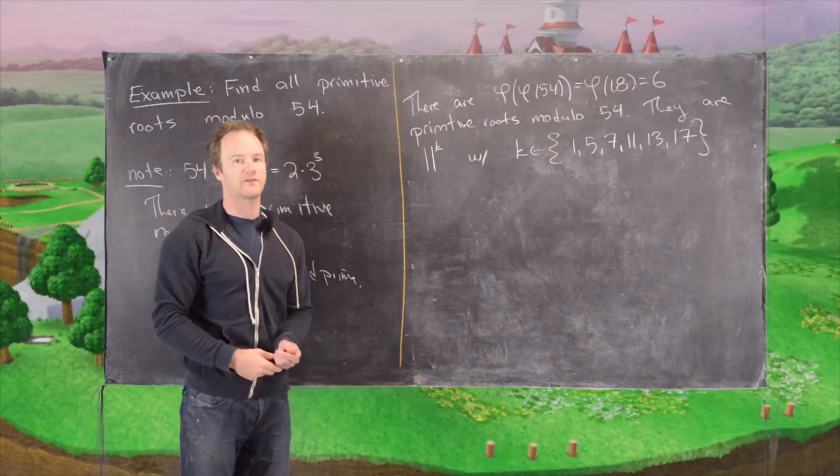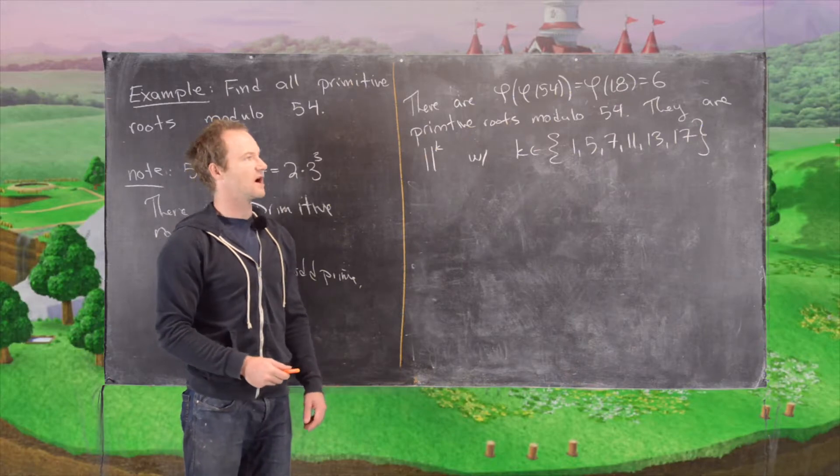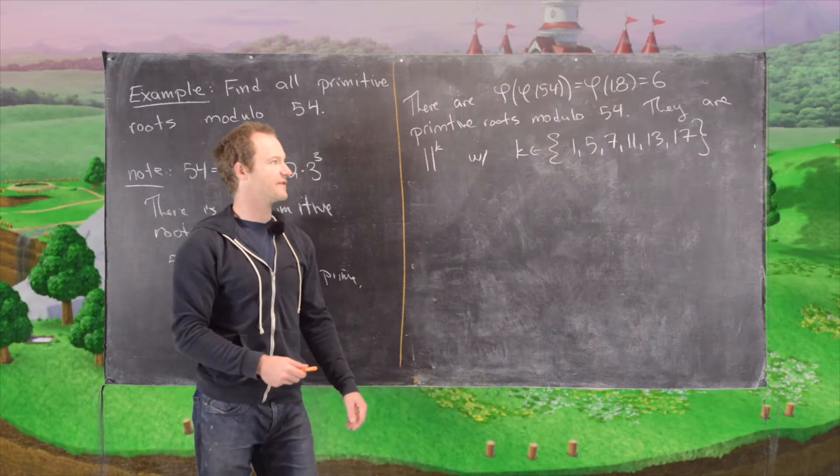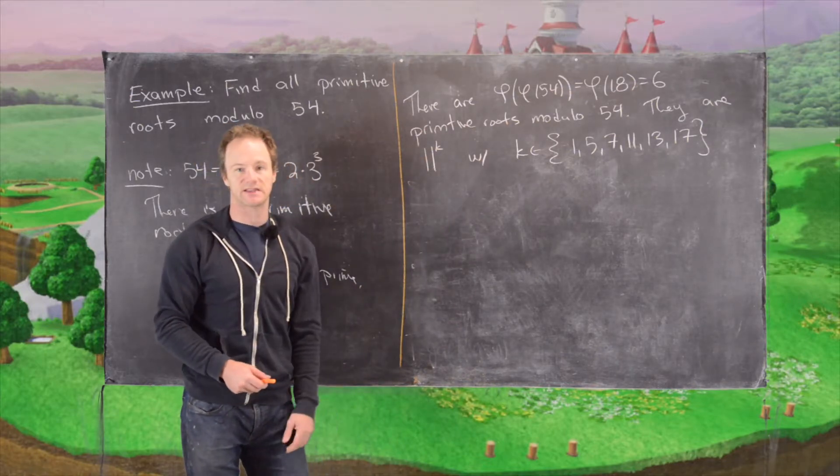Okay. So picking up where we left off. So let's recall that we have all the primitive roots of modulo 54 are 11 to the k, where k is in this set 1, 5, 7, 11, 13, and 17. So notice there's 6 elements in that set.